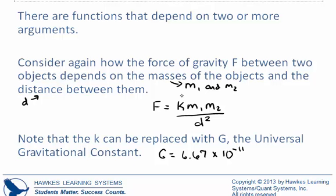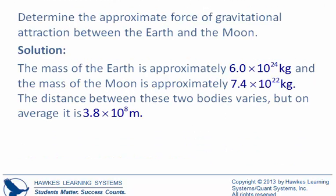So let's consider an example here. Determine the approximate force of gravitational attraction between the Earth and the Moon. So we have our two objects, the Earth and the Moon. We can look up that the mass of the Earth is approximately 6.0 times 10 to the 24th kilograms, and the mass of the Moon is approximately 7.4 times 10 to the 22nd kilograms. So we have our m sub 1 and our m sub 2. We also know the distance between these two objects is on average 3.8 times 10 to the 8th meters.